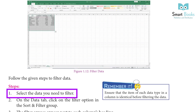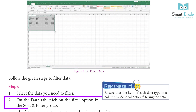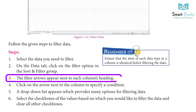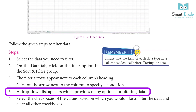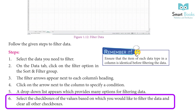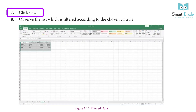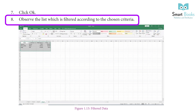Step 1: Select the data you need to filter. Step 2: On the Data tab, click on the Filter option in the Sort and Filter group. Step 3: The filter arrows appear next to each column's heading. Step 4: Click on the arrow next to the column to specify a condition. Step 5: A drop-down list appears which provides many options for filtering data. Step 6: Select the check boxes of the values you want to filter and clear all the other check boxes. Step 7: Click OK. Step 8: Observe the list which is filtered according to the chosen criteria.